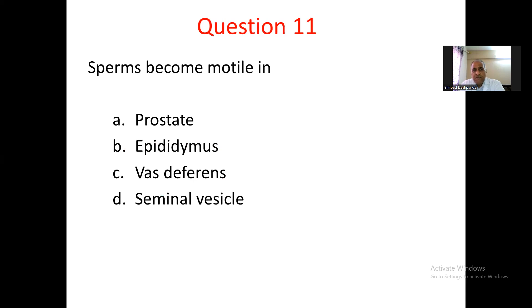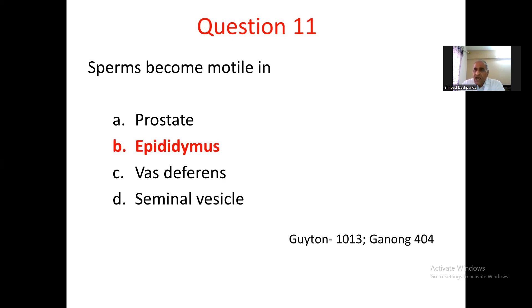Question number 11. Sperms become motile in: A. Prostate, B. Epididymis, C. Vas deferens, D. Seminal vesicle. The spermatozoa formed in the seminiferous tubules enter the convoluted tube of the epididymis, where they mature and become motile. Hence the answer is B. Epididymis. Refer to Guyton page 1013 or Ganong page 404.